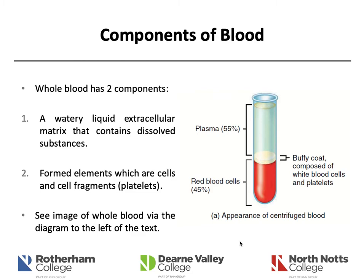Blood has two key components: the watery liquid extracellular matrix called plasma, which contains dissolved substances — generally proteins — and formed elements, which are the cells and cell fragments. To the right of the screen is an appearance of what blood looks like when passed through a centrifuge, showing the separation of components. Red blood cells are dense so they sink to the bottom, then there is a buffy coat of white blood cells and platelets, and the rest is plasma.